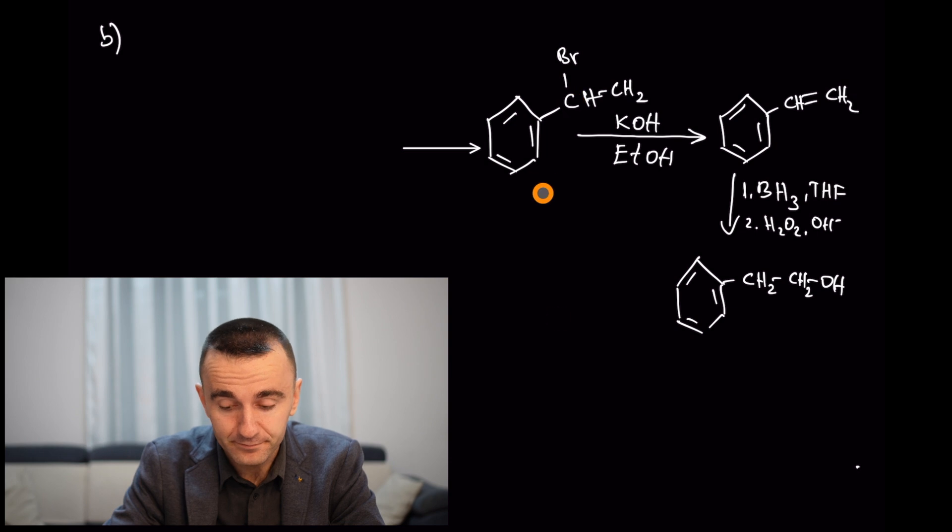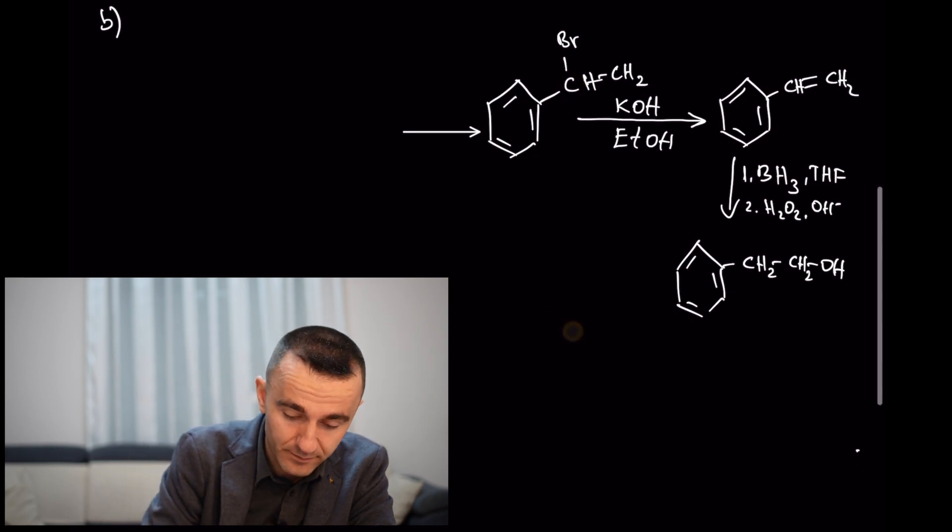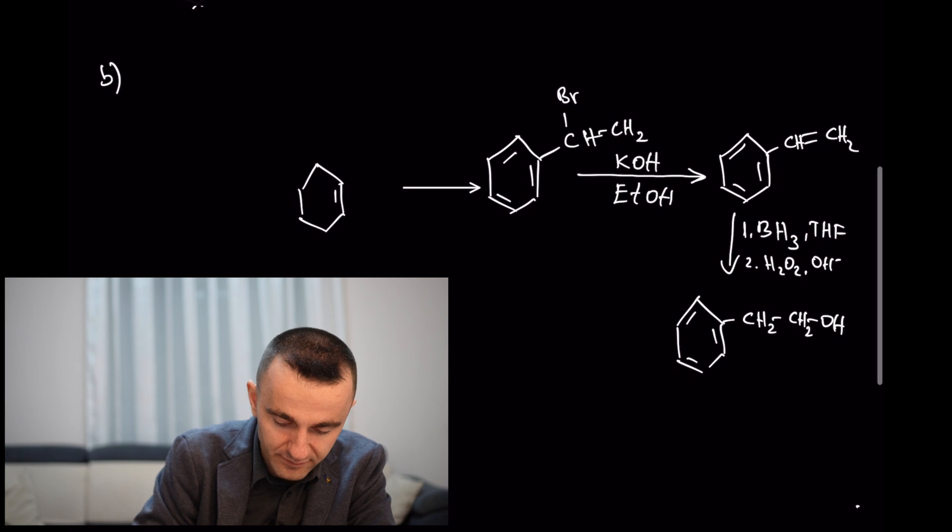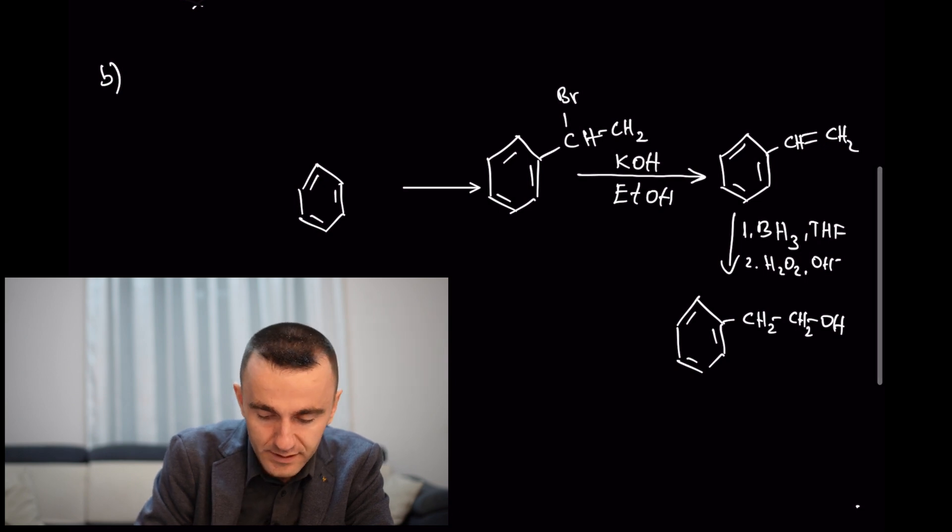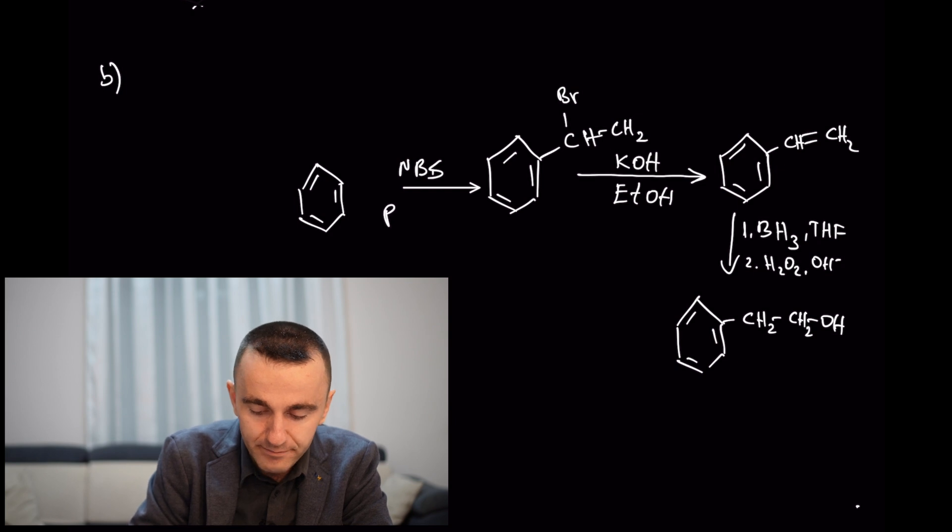We need to add a bromine at the benzylic position. We learned from the previous video: in order to do that, you're going to use NBS with benzoyl peroxide to initiate the radical mechanism, CCl4 as a solvent.